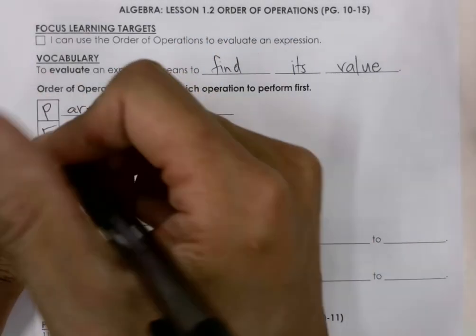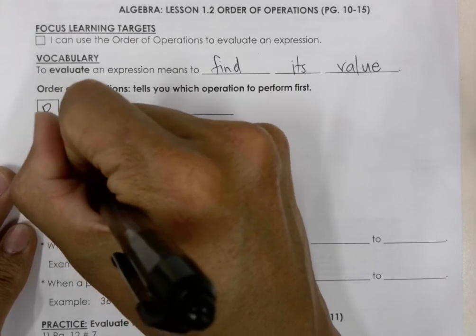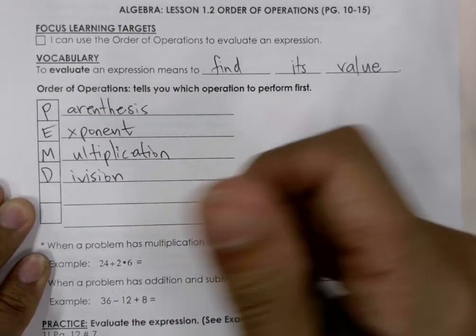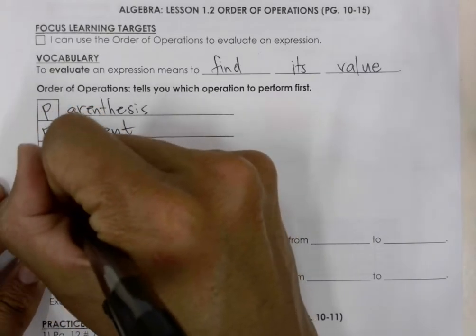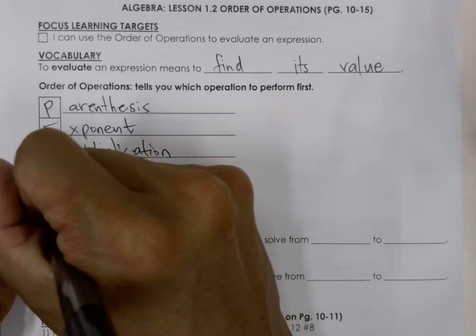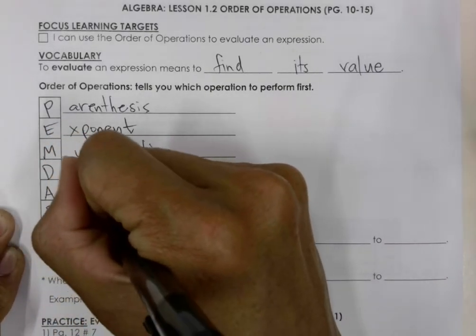The fourth would be D, Division. The fifth would be A, Addition. And the last is S, for Subtraction.